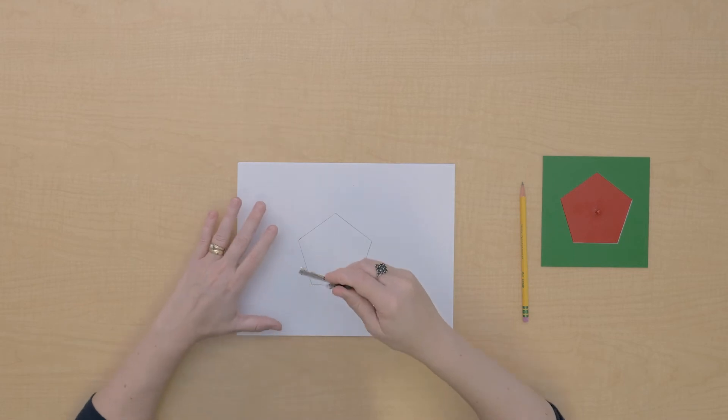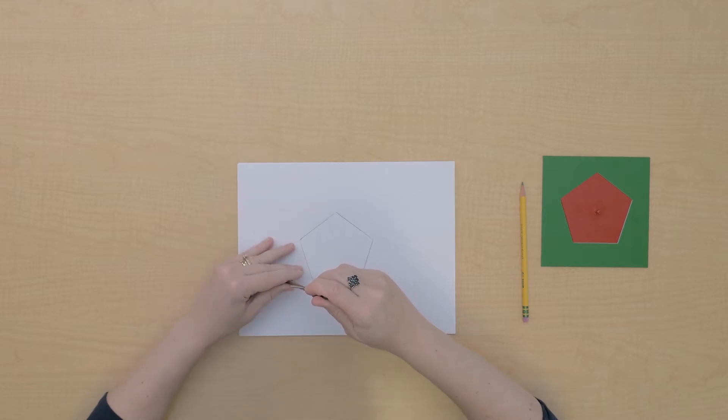So the first thing that I'm going to do is I'm going to try bisecting an angle and see if that's going to help us find the center.